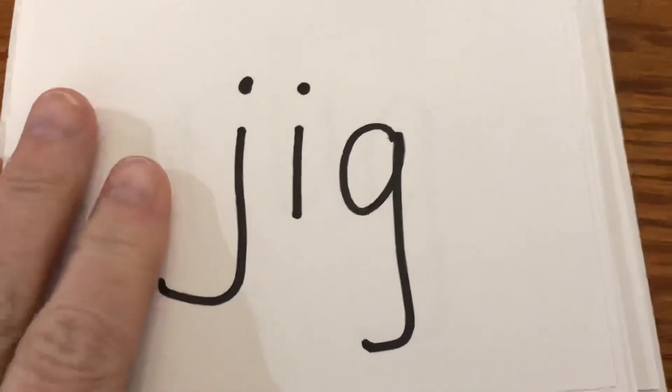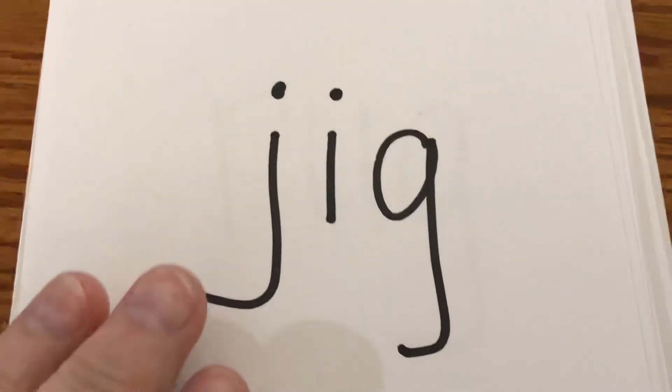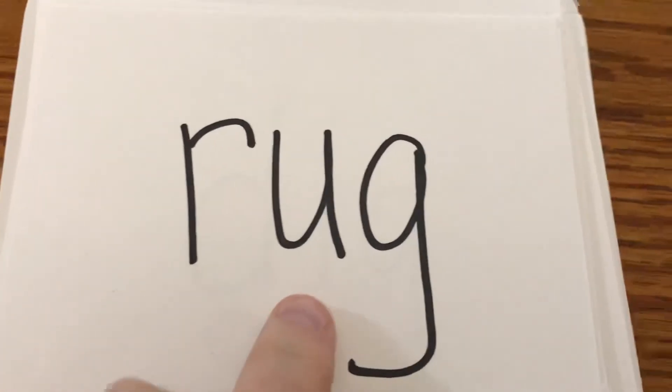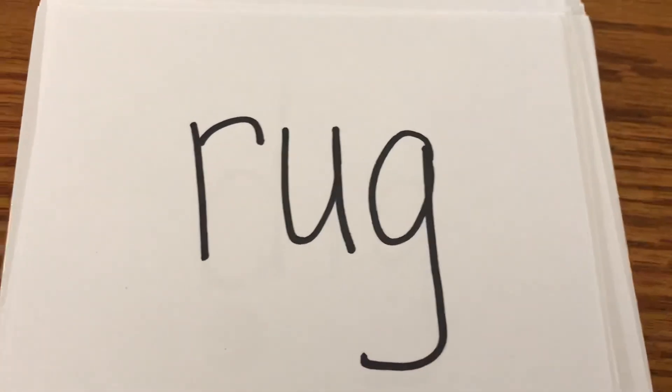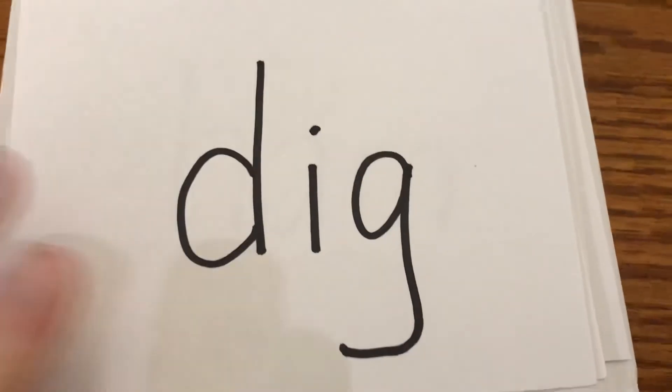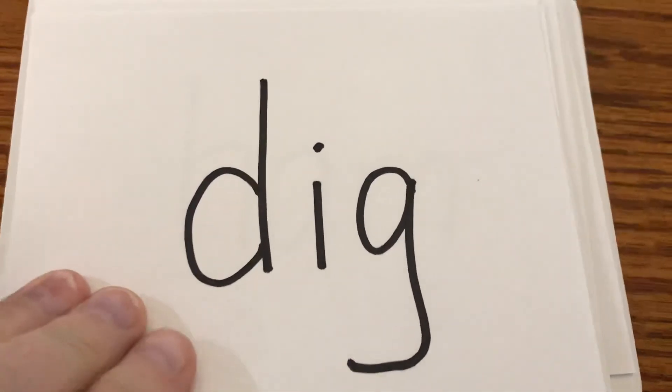J-i-g. Jig. A jig is an Irish dance. R-u-g. Rug. Sit on the rug. D-i-g. Dig. My dogs love to dig.